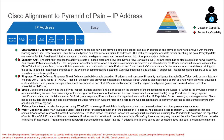Firepower Threat Defense has IP-based controls and consumes IP security intelligence through Cisco Talos. You can build custom lists and integrate with third-party feeds using STIX and TAXII. Both detection and prevention capabilities are available. Firepower Threat Defense also does deep packet analysis, which allows for advanced custom detection and prevention. There's also a geo-location feature that can block IP sources based on specific country or region. Intelligence gained can be used in any preventative platform.